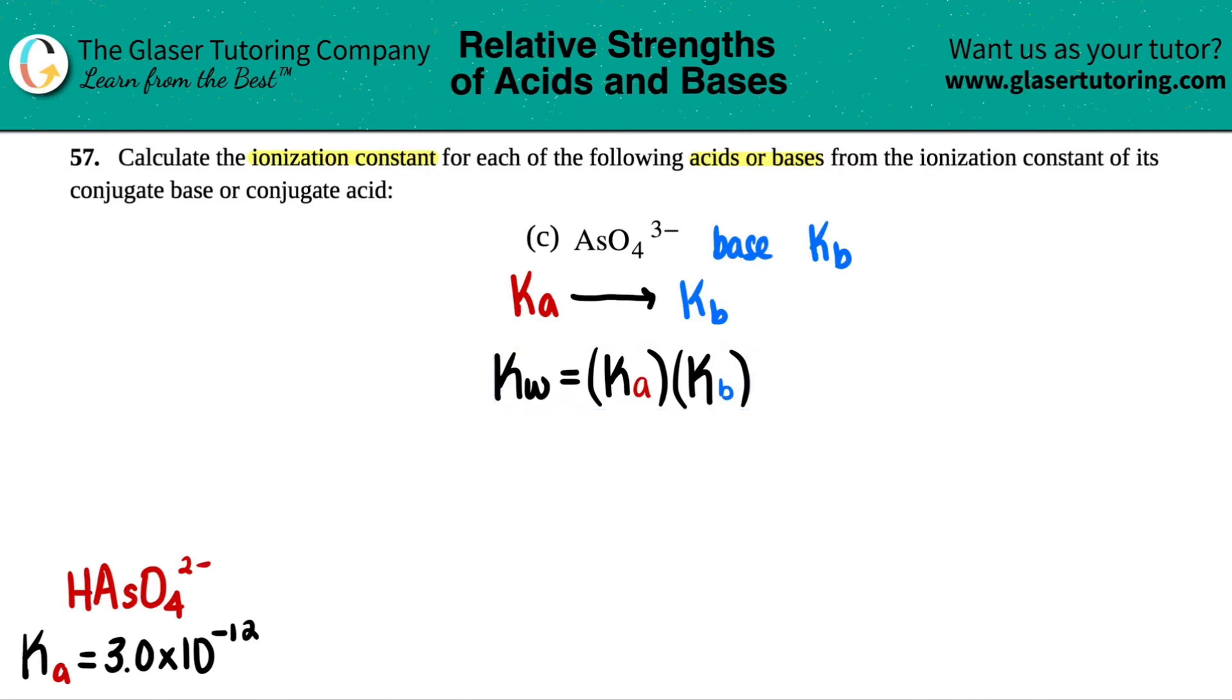Now, just for simplicity of this video, if I want to solve for Kb, how do I get Kb by itself? I would divide on both sides by the Ka, right? If I divide on both sides by the Ka, the Ka cancels out. And you have Kw over Ka equals Kb. So that's exactly what I'm going to do in this case, just easier for the video. But you don't have to do it this way. You could just memorize it, plug it in and solve, and you'll get the same exact answer.